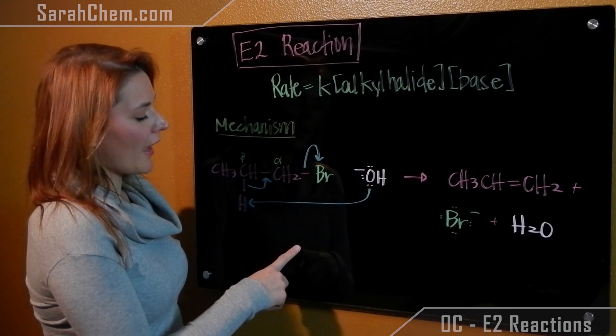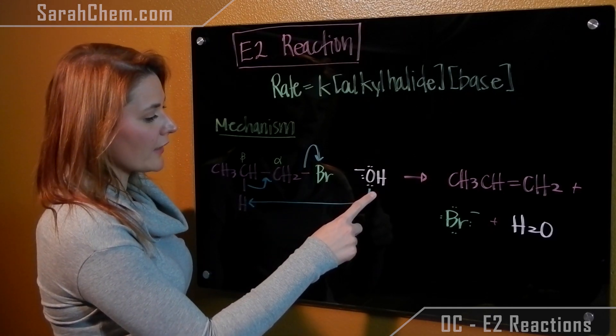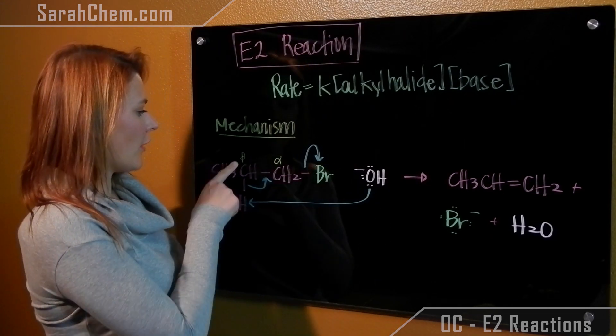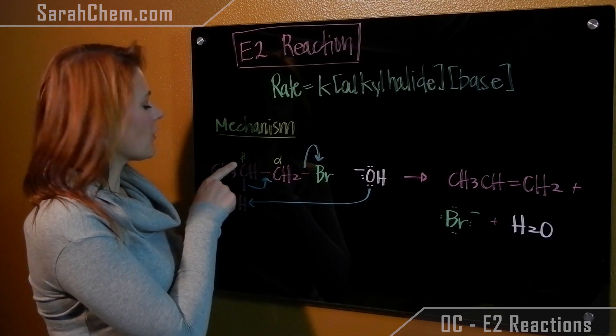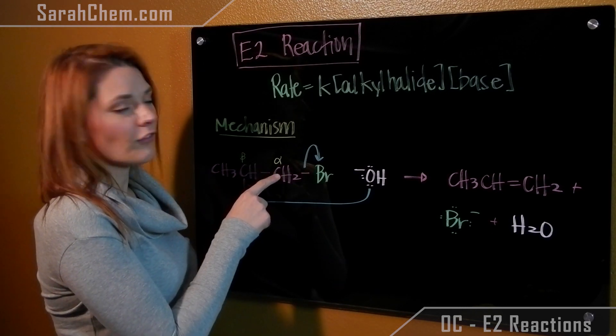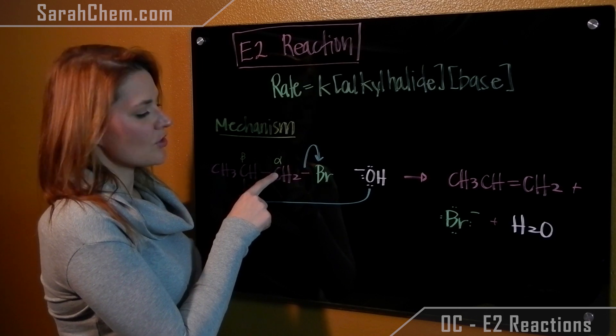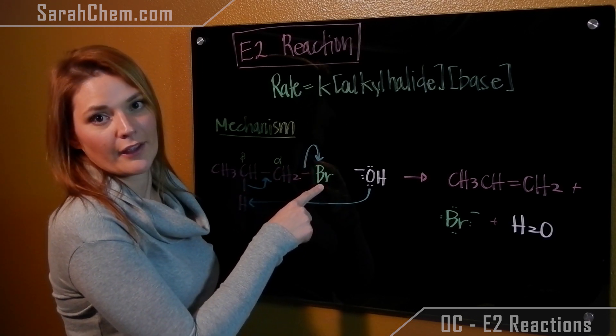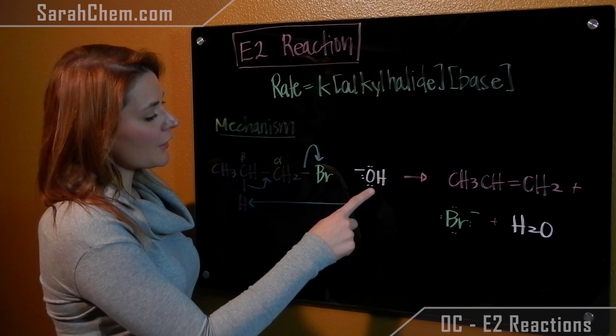So in the mechanism that we have, our strong base is going to come and it attacks the hydrogen of our beta carbon. Remember that the beta carbon is adjacent to the alpha carbon and the alpha carbon is directly attached to whatever halide group that we're looking at.